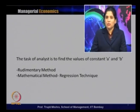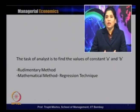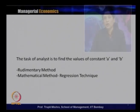The task of analysis is to find the value of the constants a and b, where a is the intercept and b is the slope. Because on the basis of the values of a and b, we will come to know the relationship between the dependent variable and the independent variable. Generally, two methods are followed to find out the values of a and b: one is the rudimentary method, and the second is the mathematical method, typically known as the regression technique.